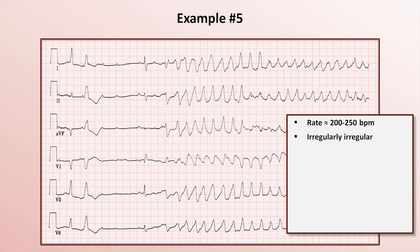It's irregularly irregular and the QRS complexes are wide. We could stop right there since we already have a probable diagnosis, but for instructive purposes let's see if we can identify any atrial activity.